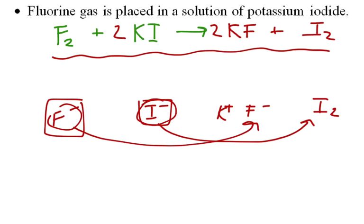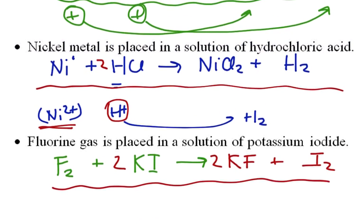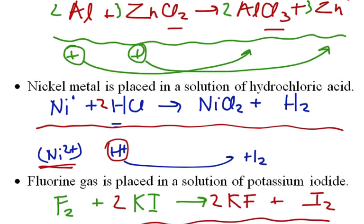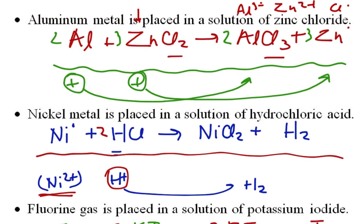In the cases before: nickel becomes a positive ion so it replaces the positive hydrogen, and aluminum becomes a positive Al³⁺ ion so it replaces the positive zinc. That's how we predict these types of reactions.